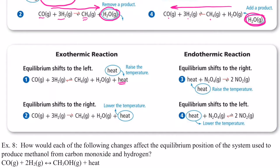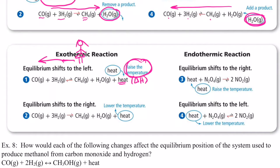Think of it as a fireplace. If I raise the temperature on an exothermic reaction, we want to get away from the heat. I've always used the analogy of a little girl — when it gets hot she moves away from the heat. So if I raise the temperature on an exothermic reaction, the equilibrium will shift to the left.